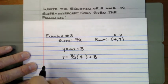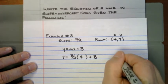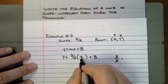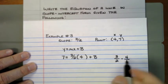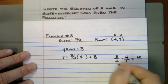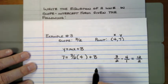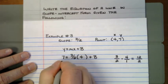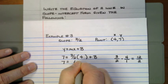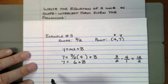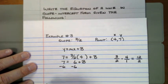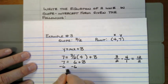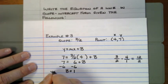I'm going to multiply the fraction 3 halves by the whole number 4. Writing 4 as a fraction — 4 over 1 — then multiplying the tops: 3 times 4 is 12, and the bottoms: 2 times 1 is 2. I can simplify: 12 divided by 2 is 6. So now I have 7 equals 6 plus b. The opposite of positive 6 is negative 6, so I subtract 6 from both sides: 7 minus 6 is 1. This means b equals 1, which is my y-intercept.